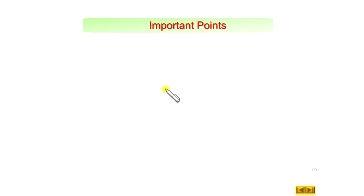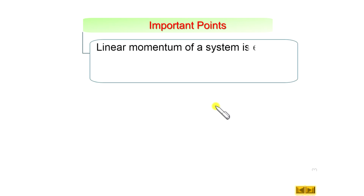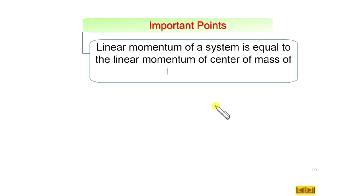Now let us discuss some important points. One important point is that the linear momentum of the system is equal to the linear momentum of the center of mass of the system. That means if we want to calculate the linear momentum of the system, we need not bother about individual calculation of each particle. If we know the velocity of the center of mass, we can simply calculate the linear momentum of the system as the mass of the system multiplied by the velocity of the center of mass.